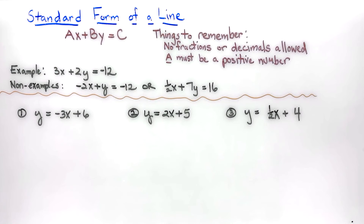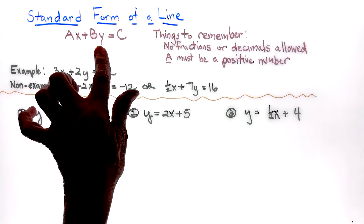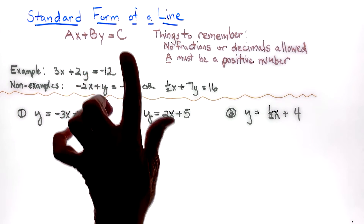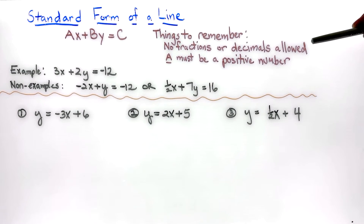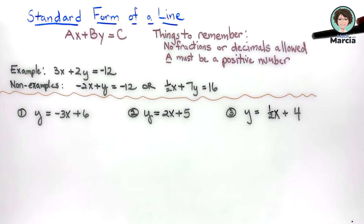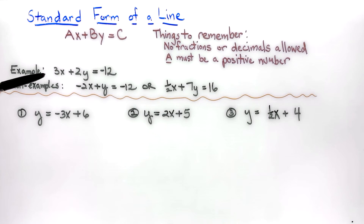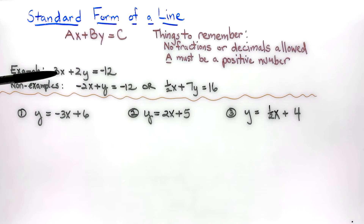This lesson involves standard form of a line. The format is Ax plus By equals C. Two things to remember: no fractions or decimals are allowed, and A must be a positive number. An example is 3x plus 2y equals negative 12 — c can be negative, just the x coefficient cannot.